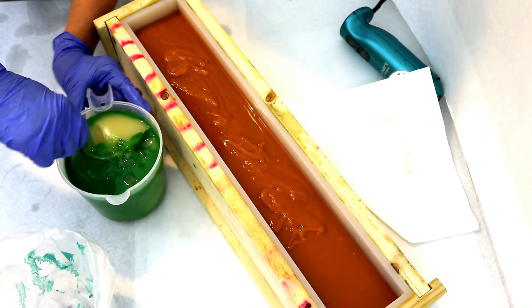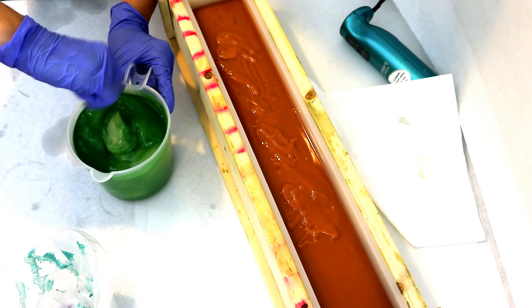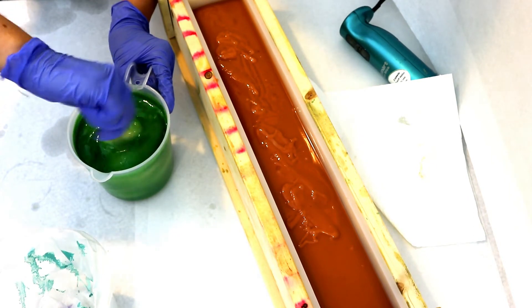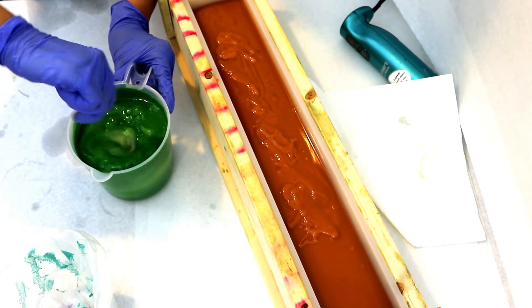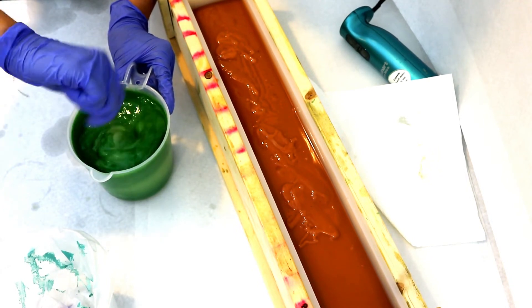Okay, so now I'm going to mix up the green oxide color and that will be the leaves. Just stirring it to get all those lumps and make sure it's evenly mixed.